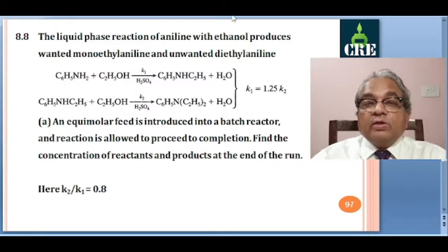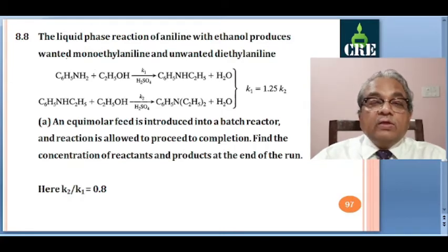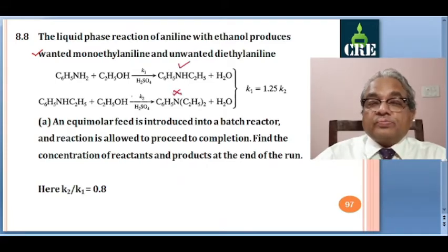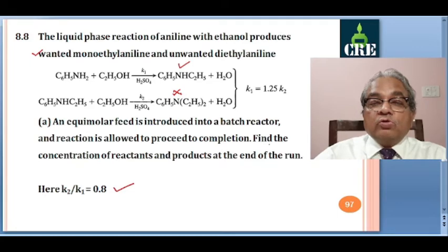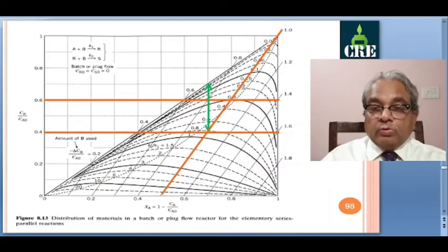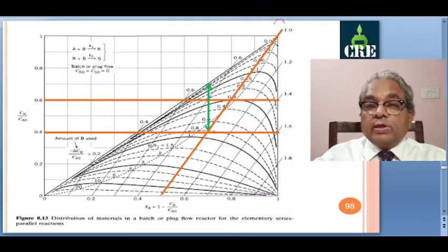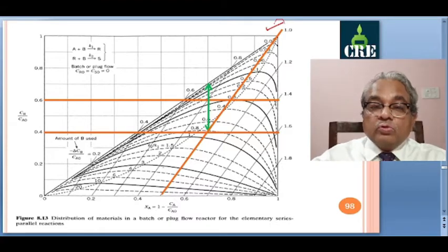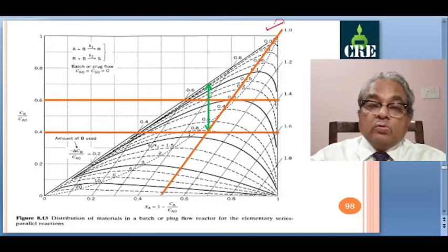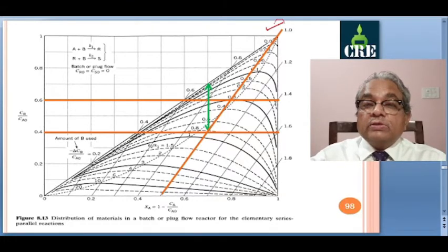Problem 8.8. The liquid phase reaction of aniline with ethanol produces unwanted monoethylaniline and unwanted diethylaniline, with monoethylaniline as the wanted product. K1 is 1.25 times K2, so K2 by K1 is 0.8. Equimolar feed is introduced in a batch reactor, and reaction goes to completion. We need to find the concentration of reactants and products at the end of the run. With equimolar feed and reaction going to completion, delta CB by CA0 equals 1.